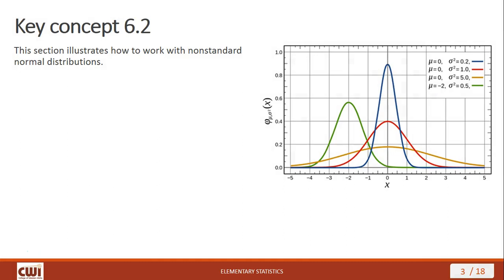This section illustrates how to work with non-standard normal distributions. StatCrunch makes it really easy to deal with non-standard normal distributions, but it's a good idea to know what that normal calculator is doing in the background so that you understand more of what you're looking at. This helps us to make better use of the numbers that the statistics give us, which enables us to make better conclusions.